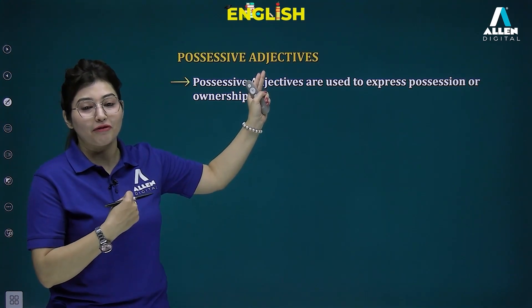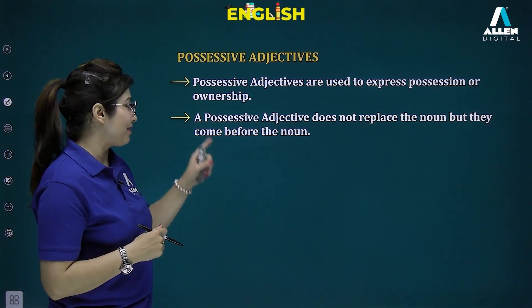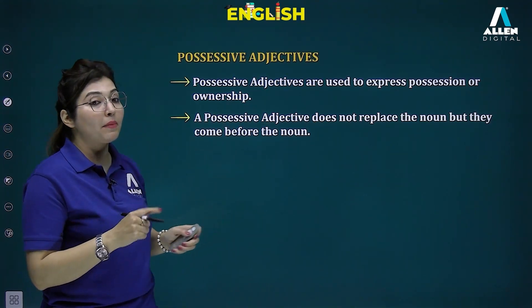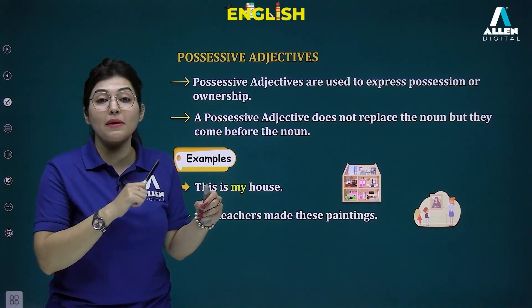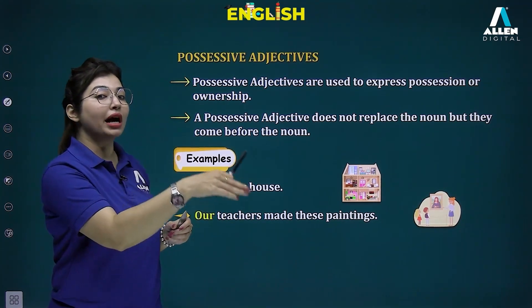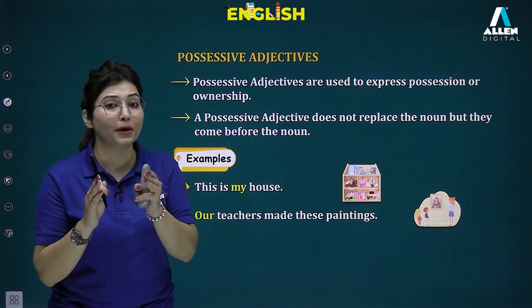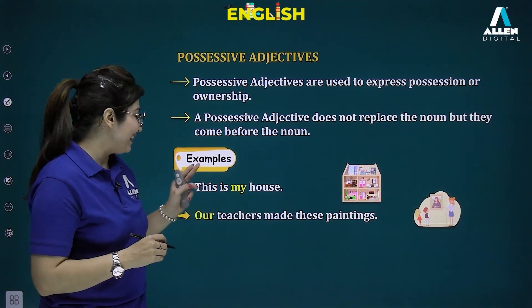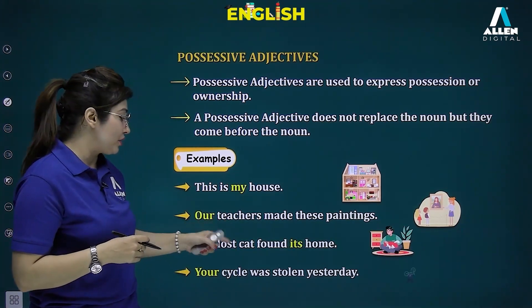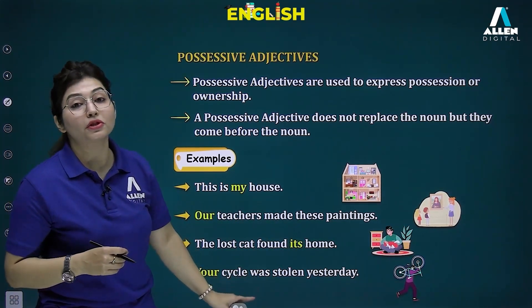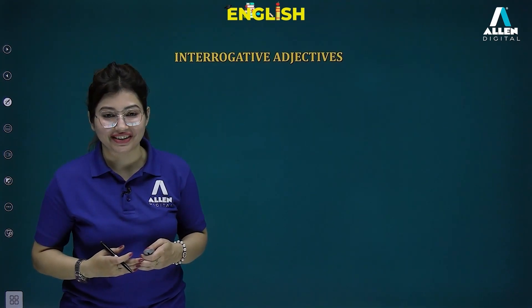Possessive adjectives express ownership, belonging, or possession. They come before the noun — for example, 'this is my pen' where 'my' is a possessive adjective. Note that 'my' is a possessive adjective but 'mine' is a possessive pronoun. More examples: 'this is my house', 'our teachers made these paintings', 'the lost cat found its home', 'your cycle was stolen yesterday' — in all cases the possessive word appears just in front of the noun.